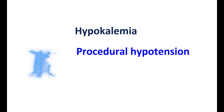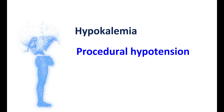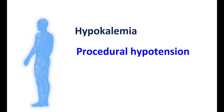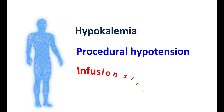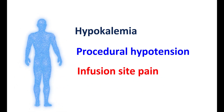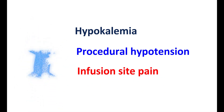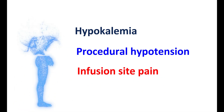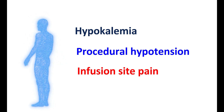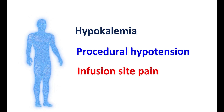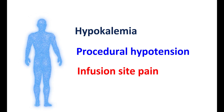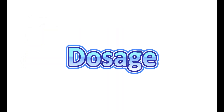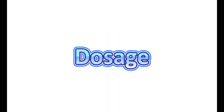Amisulpride can also produce postural hypotension, which is temporary. When given by infusion, it may cause infusion site pain and redness. Other side effects such as chills and abdominal pain can also be observed.